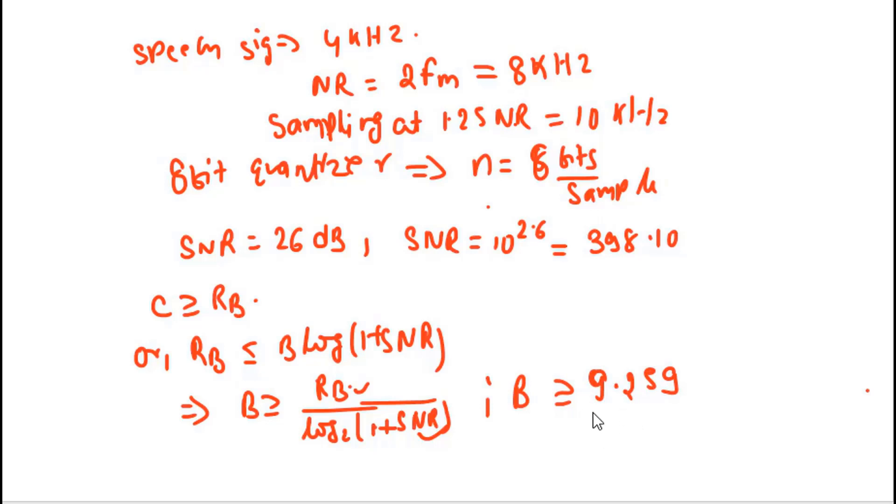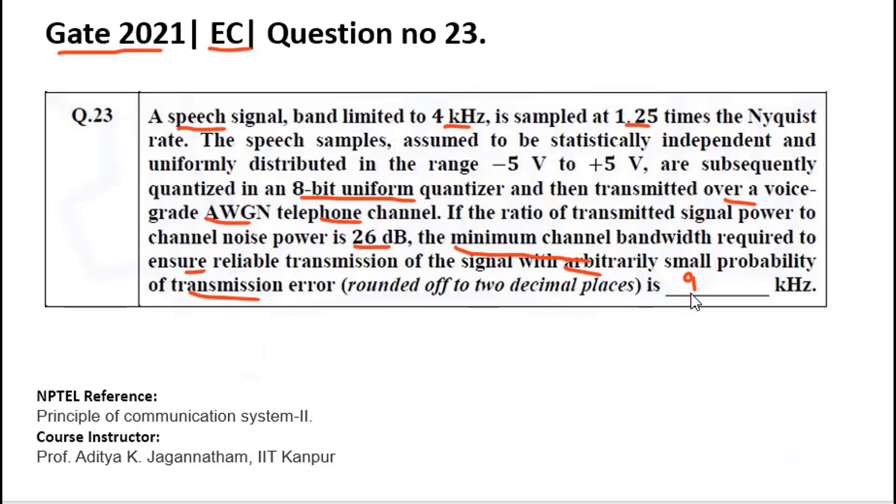The channel bandwidth should also be greater than or equal to 9.26 kHz for perfect transmission with arbitrarily small probability of error. The correct answer for this question is 9.26 kHz.